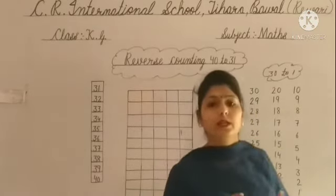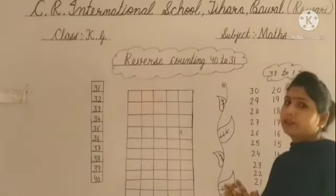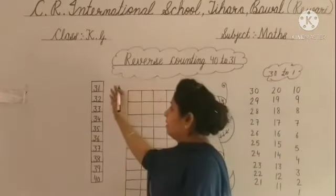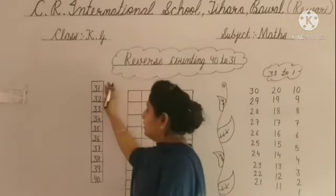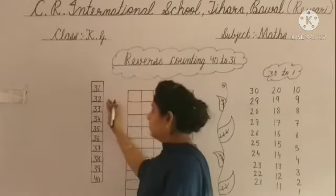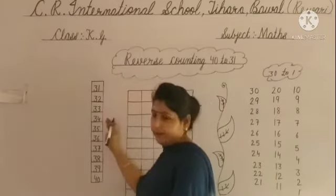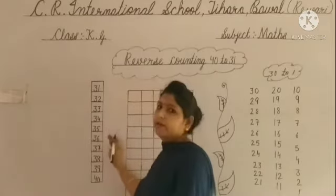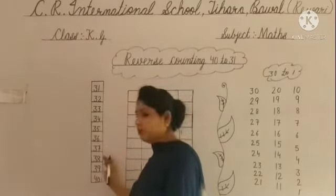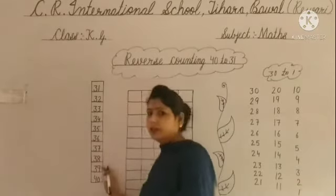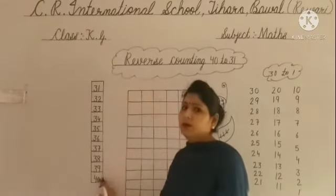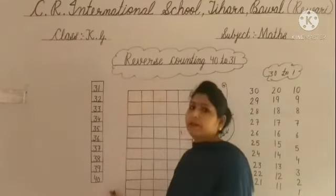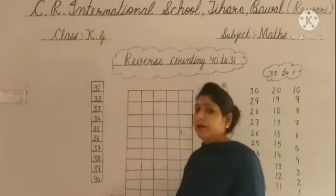इसे उल्टी गिन्ती कहते हैं, जिसको हम backward counting भी बोलते हैं. Okay? आज की हमारी row है 31, 32, 33, 34, 35, 36, 37, 38, 39, and 40. आज हम 31 to 40 की reverse counting करेंगे.